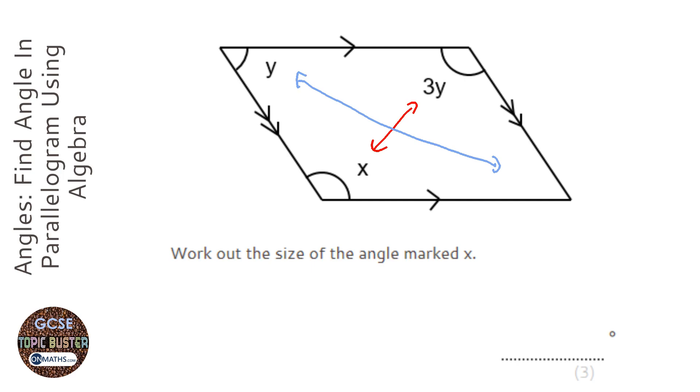So, knowing that, we know that this one is going to be y, and this is called x, but it's also 3y. So, adding all of those up, so 6, 7, 8, all together we have 8y.